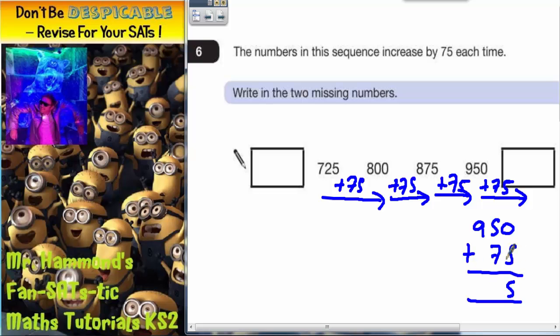0 plus 5 is 5. 5 plus 7 is 12. Put your 2 in, carry your 1. 9 plus 1 is 10. Put your 0 in. 9. We could carry the 1, but because we've run out of columns anyway, we might as well just put that 1 in the answer. So the answer to that box is 1025.